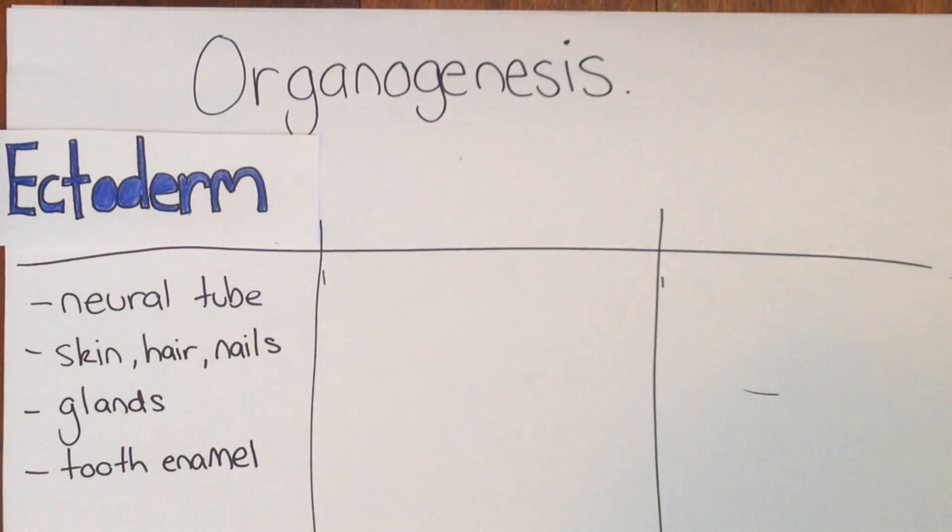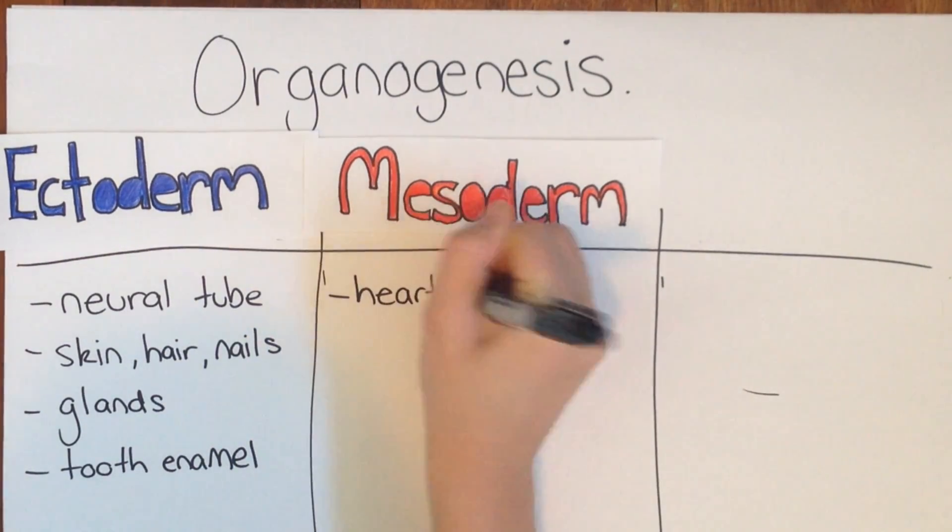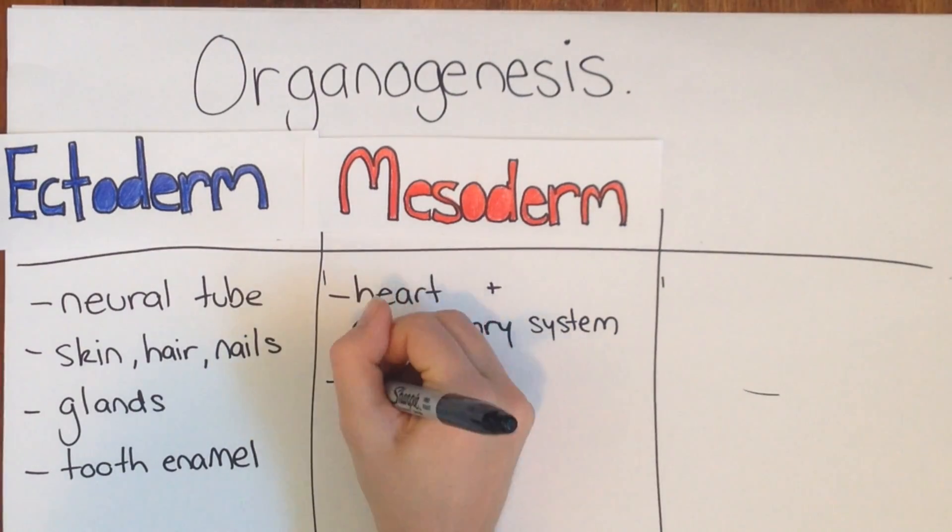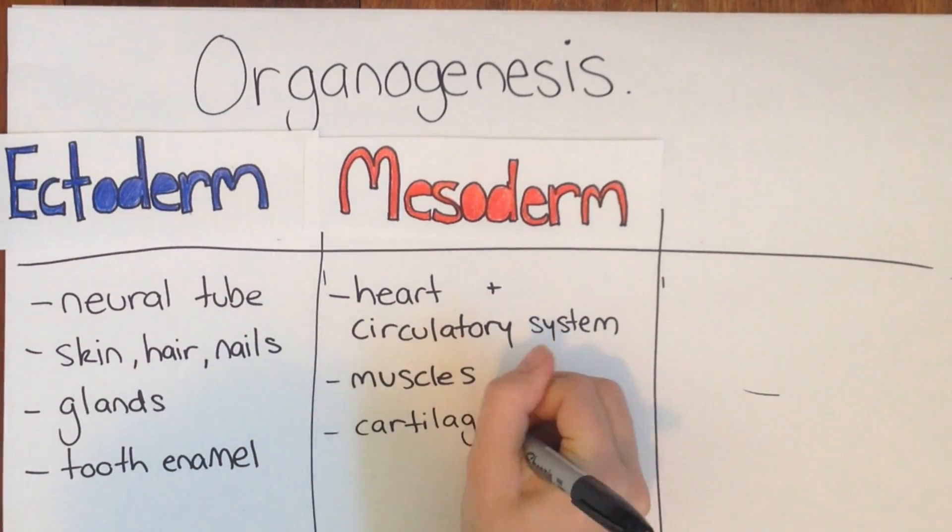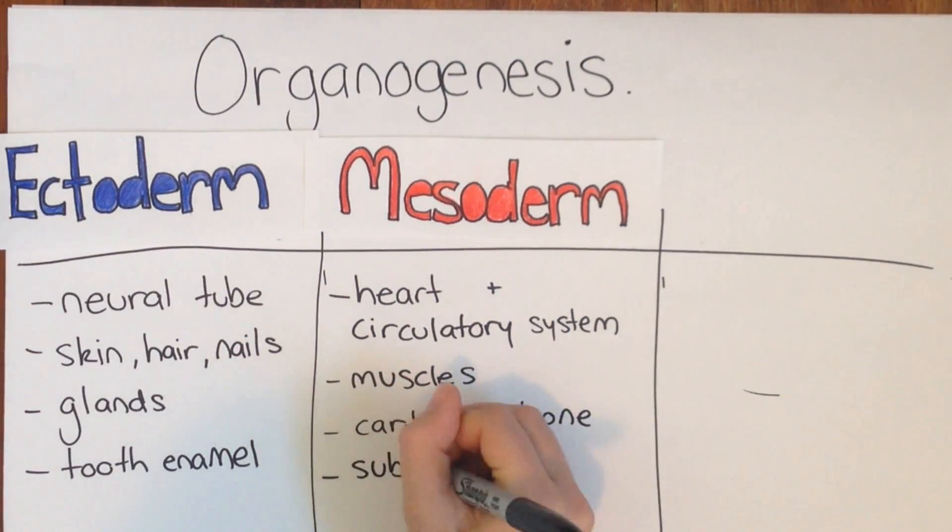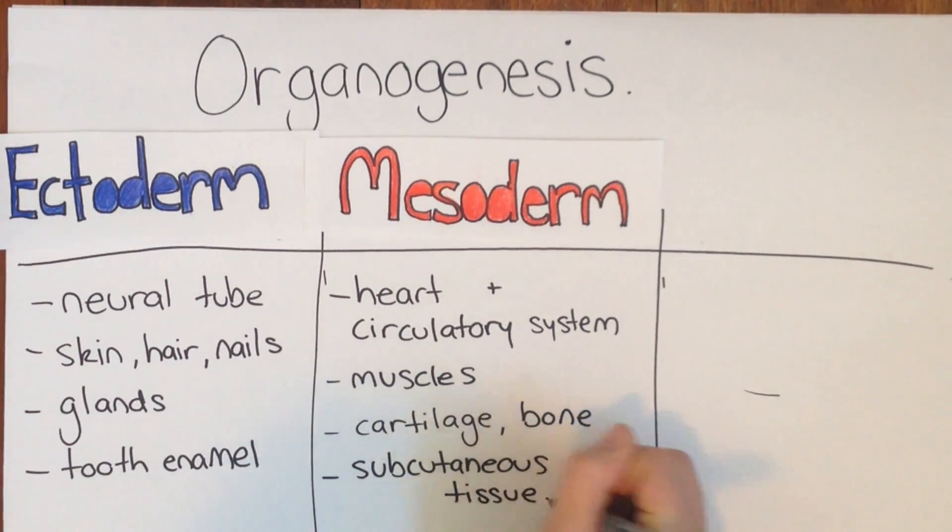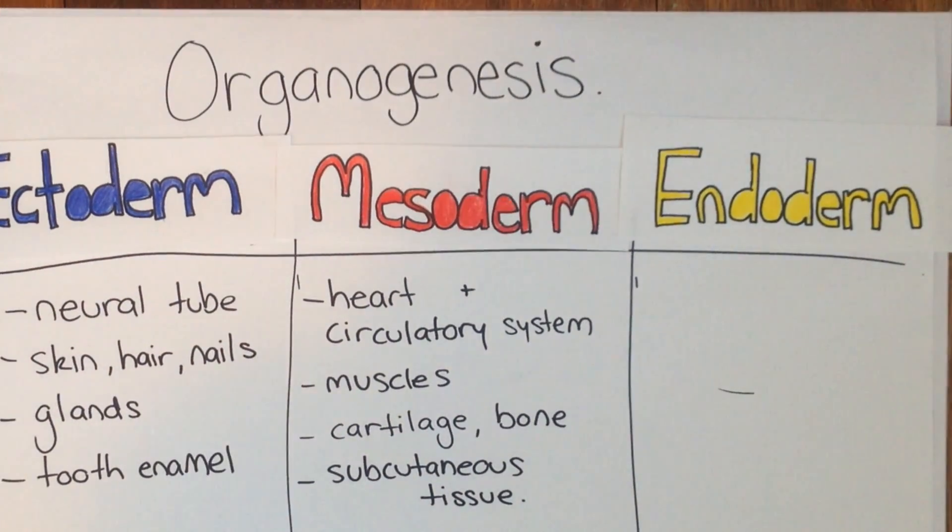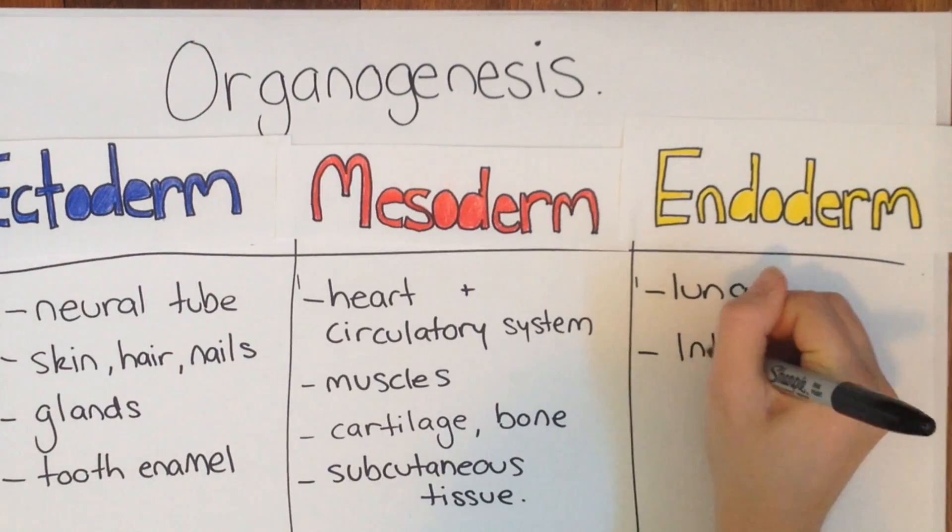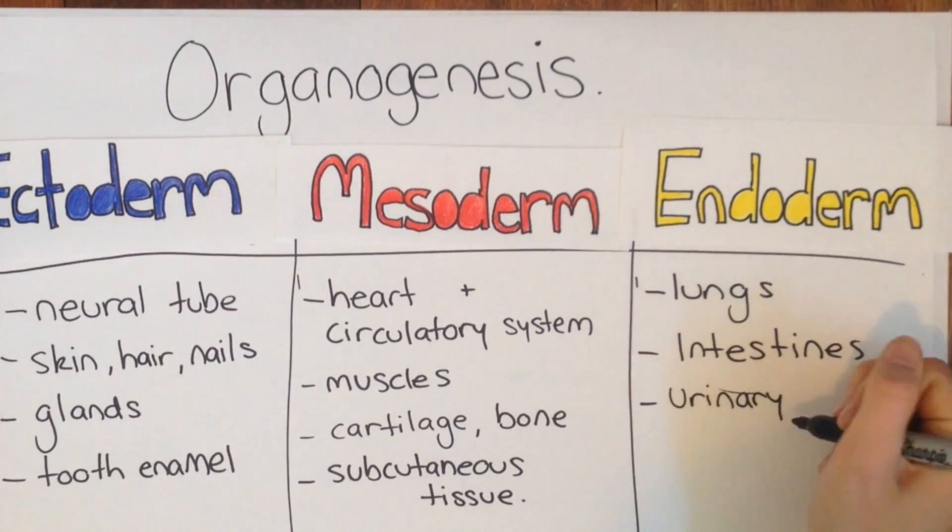The heart and circulatory system begin to form in the middle layer or mesoderm. The mesoderm will also form your baby's muscles, cartilage, bone and subcutaneous tissue. The third layer or endoderm will house the lungs, intestines and early urinary system, as well as the thyroid, liver and pancreas.